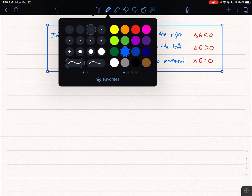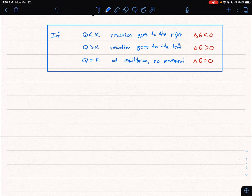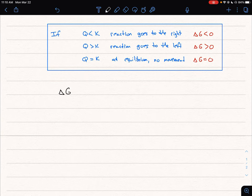And so this equation that we're now going to show for the Gibbs free energy, we've essentially already been talking about without putting it in equation form. We can say delta G is equal to delta G not.